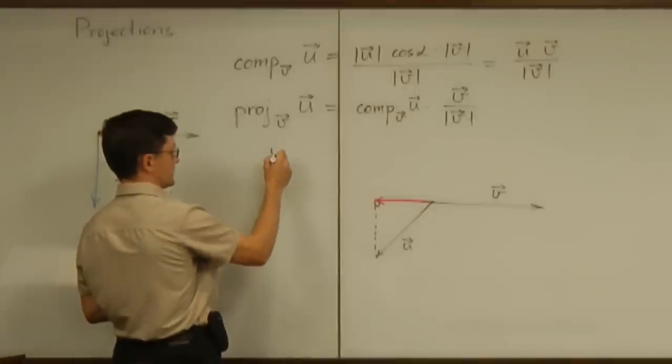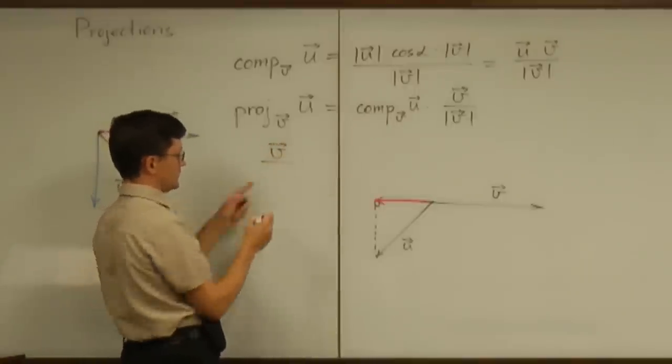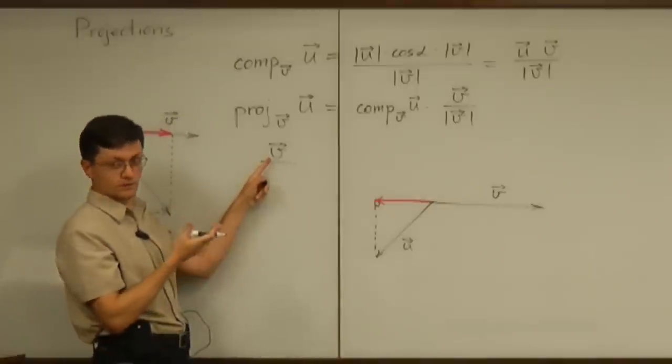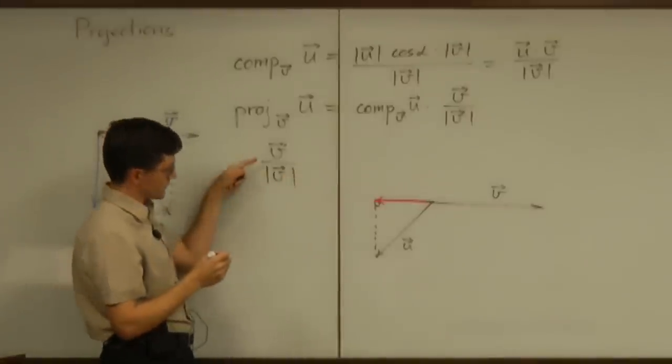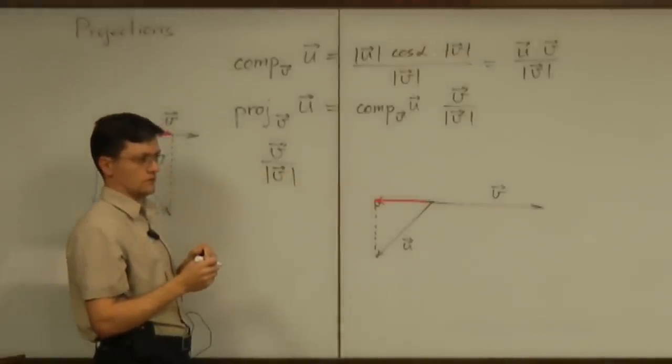And there is something special about this vector. You take any arbitrary vector and divide by the magnitude of the same vector. And what kind of vector is that? It's a unit vector.